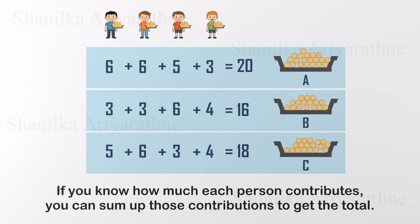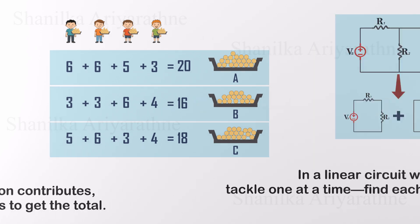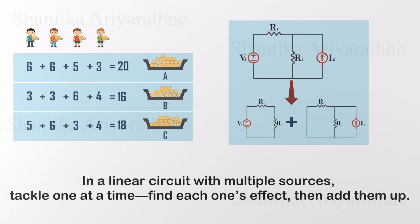So what does this mean for circuits? The superposition theorem says this. If your circuit has multiple power sources, you don't need to handle them all at once. Just take one source at a time, solve the circuit with only that one active, and then add up all the results. That's it.